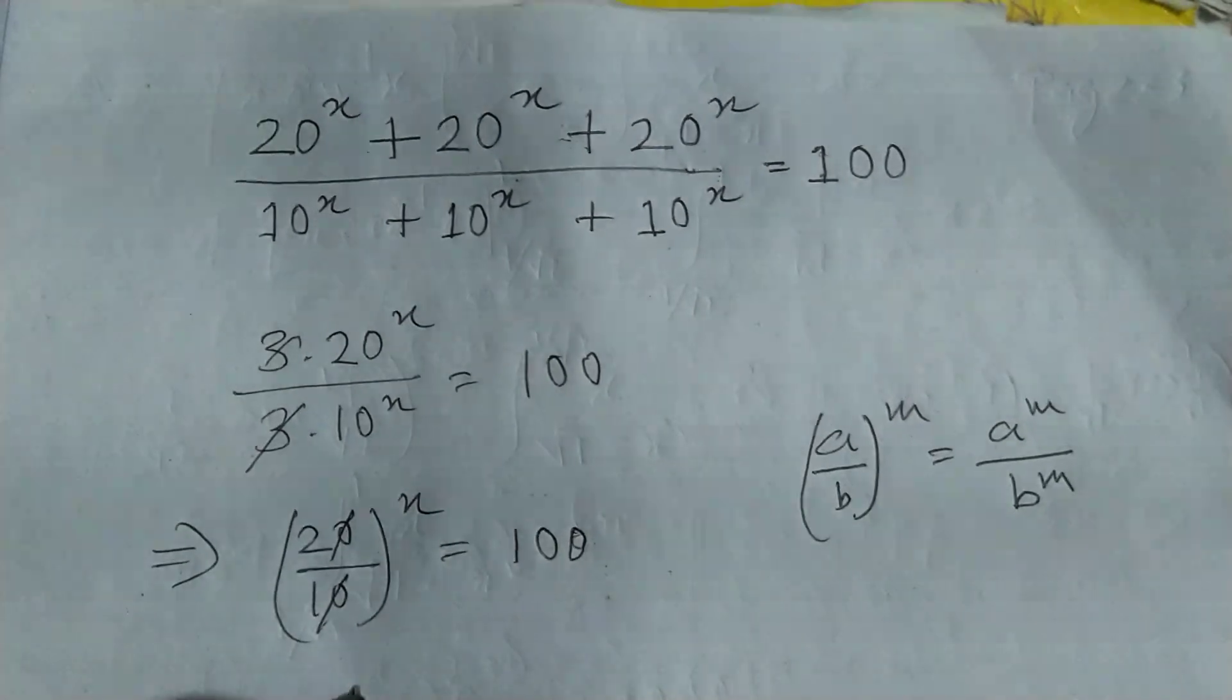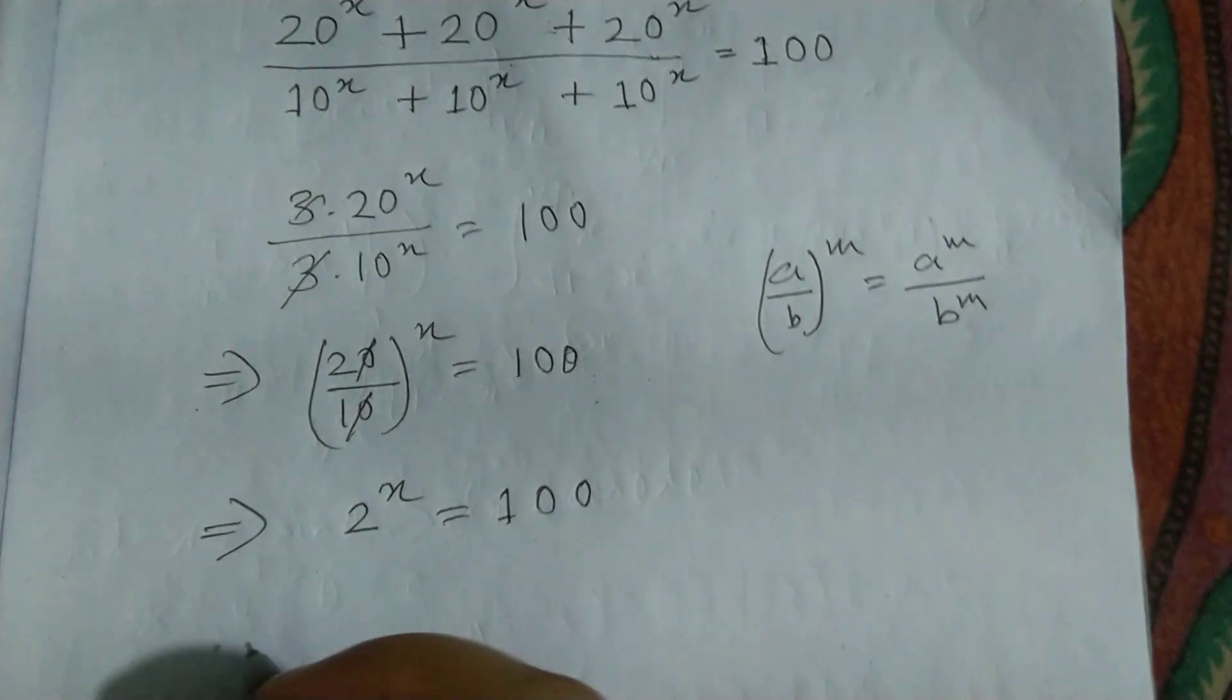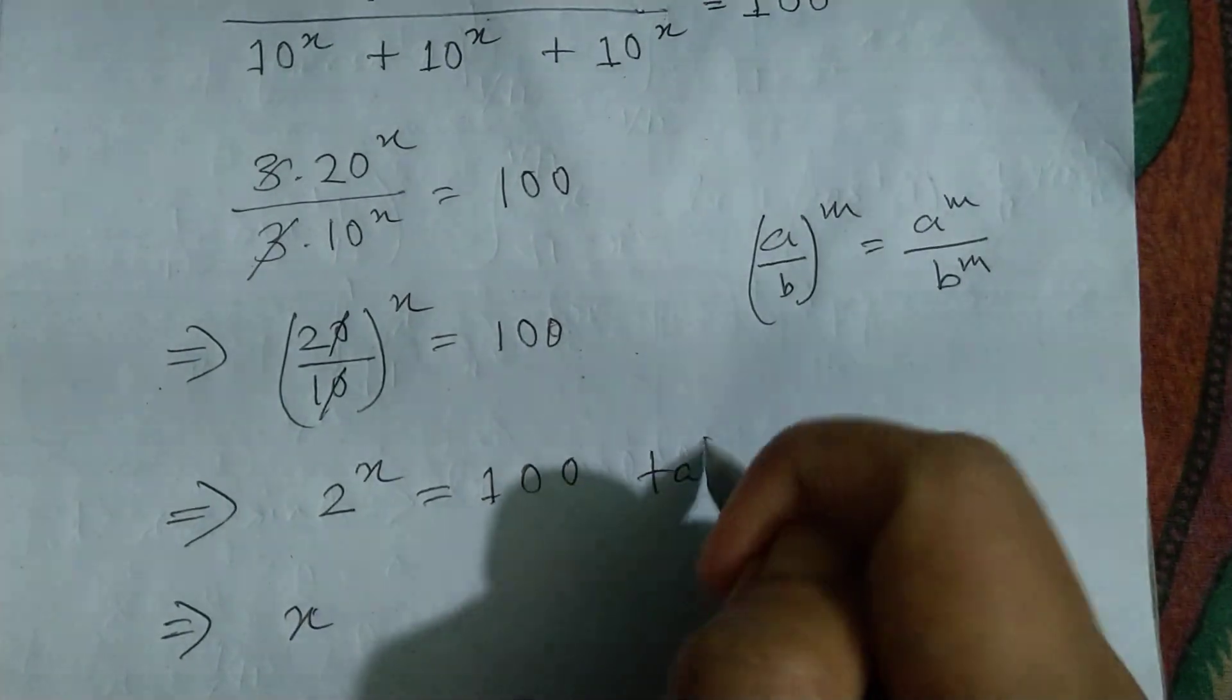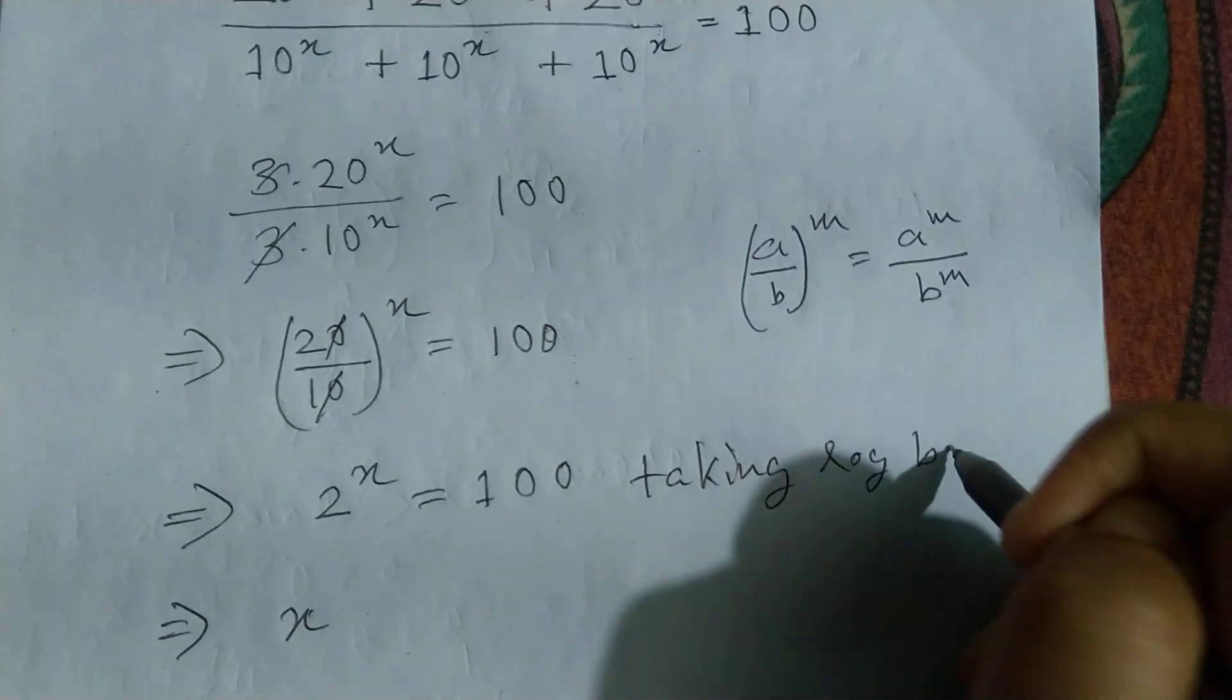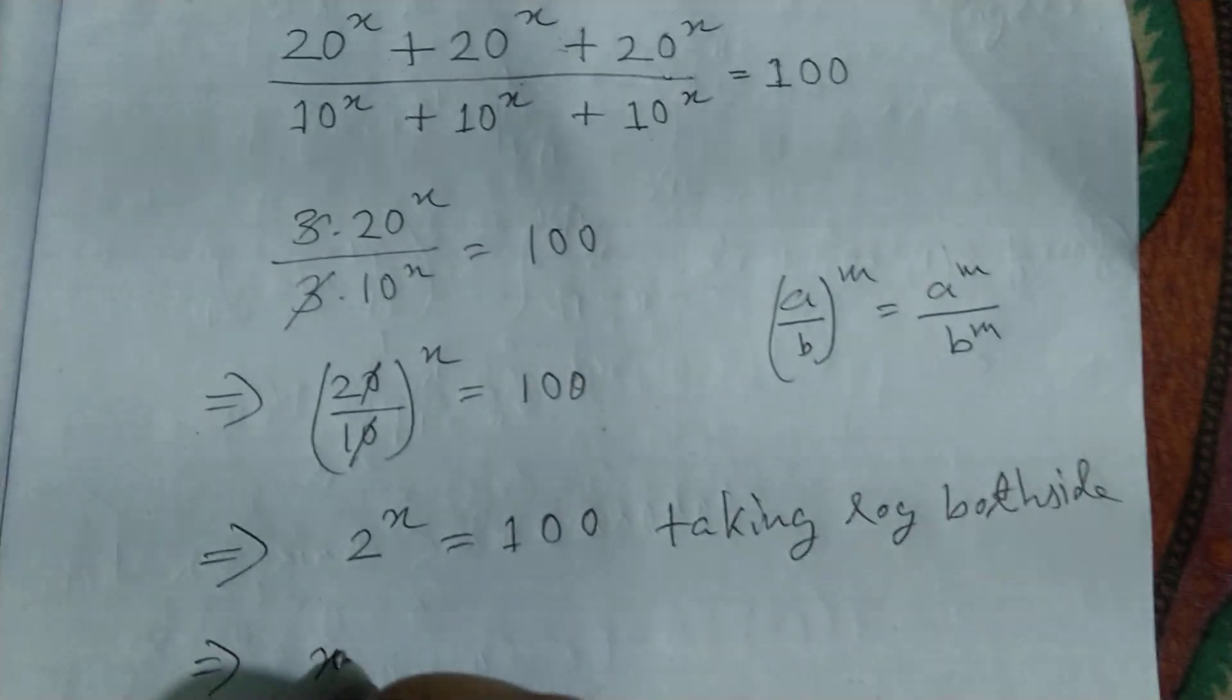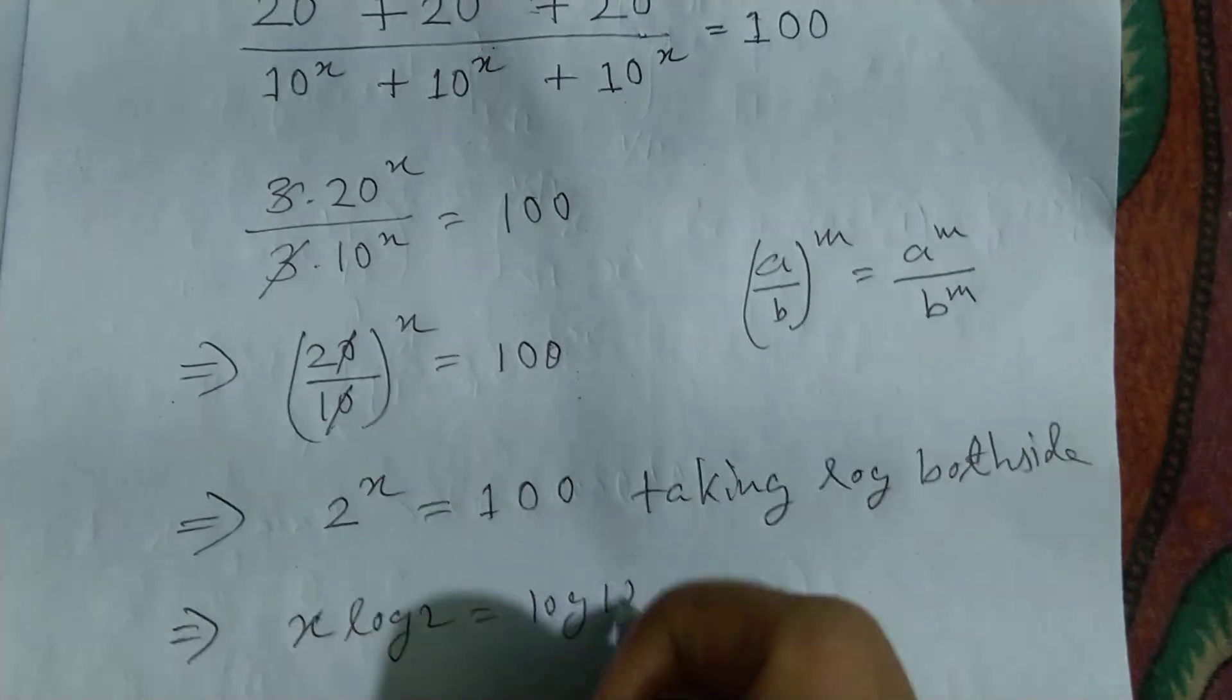Now I can write, taking log both sides, so I get x log 2 = log 100. And next we can write x = log 100 divided by log 2.